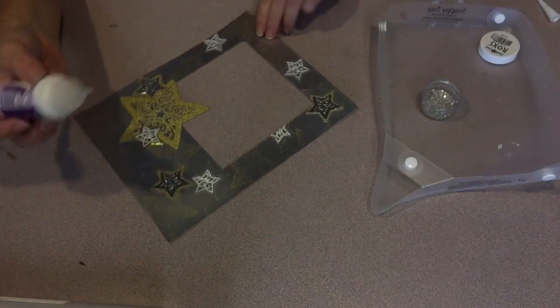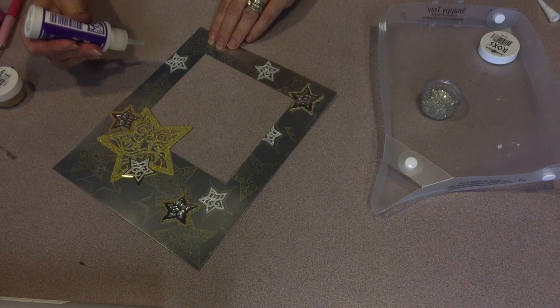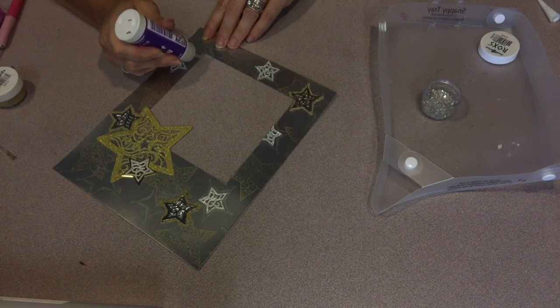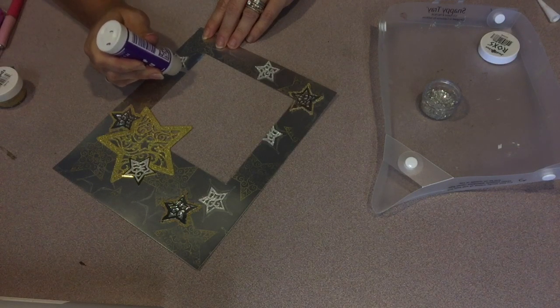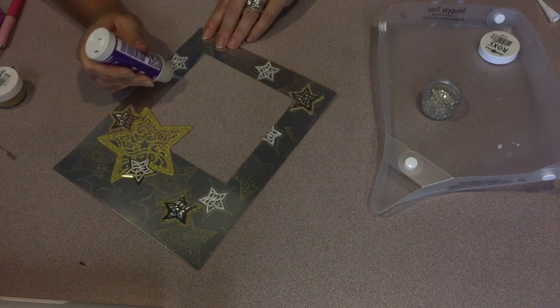I wanted to add some silver rocks, which is a German glass chunky glitter from Judykins, around the center opening for the photo. So I just outlined it, and then applied the rocks.